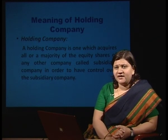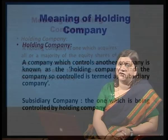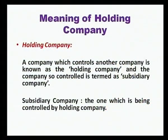Let us analyze this definition in easy terms. A company which controls another company is known as a holding company, and the company so controlled is termed as subsidiary company. So, holding company is the controlling company, while the one which is being controlled is known as subsidiary company.